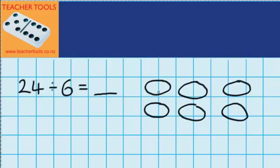Well, one way to do it would be to share them out one at a time — putting one in each group, going around again so now there's two in each group, then going around again. But you can see that this is a really slow way of doing it. I'm going to get the right answer, but it's just going to take lots of time.